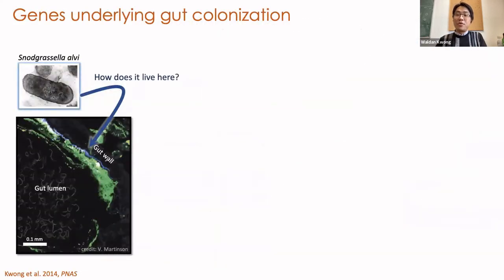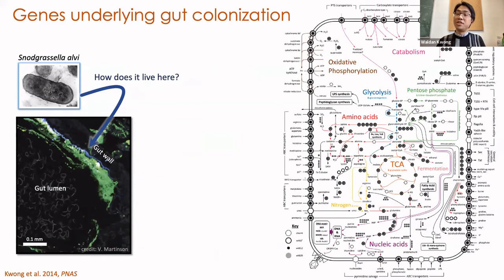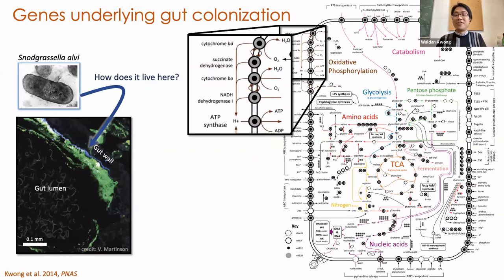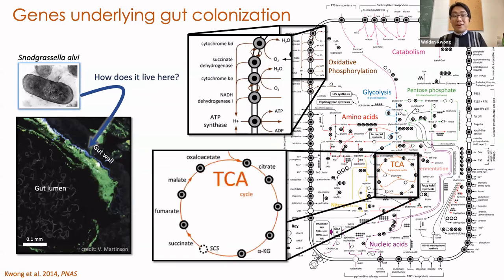What I want to discuss is the question of how an organism survives in its environment. In the case of Snodgrassella, we wanted to know which genes enable it to thrive in the bee gut. The first thing I did was to assemble the genome and identify the metabolic pathways encoded within. We know from cultivation that Snodgrassella is a microaerophile — it requires some oxygen to grow. Looking at its genome, we see cytochrome oxidase, NADH hydrogenase — all good. There is also a TCA cycle, but it was actually missing succinyl-CoA synthetase.